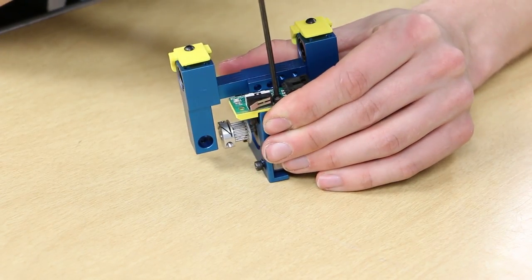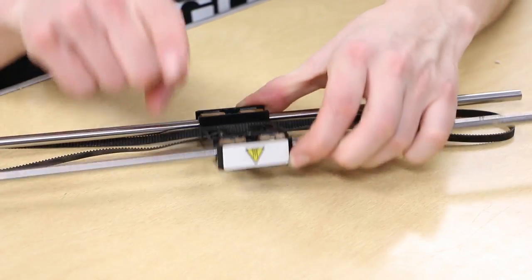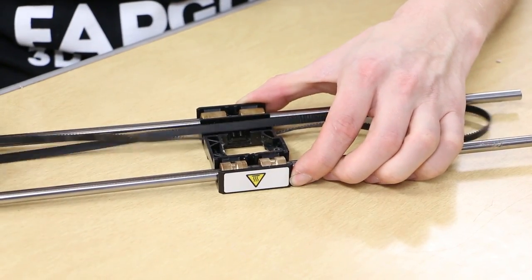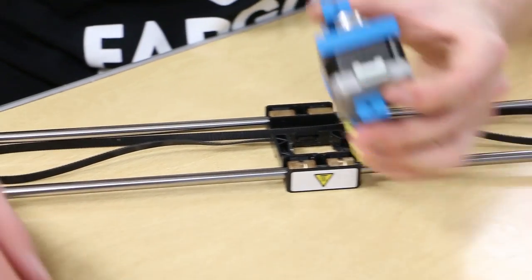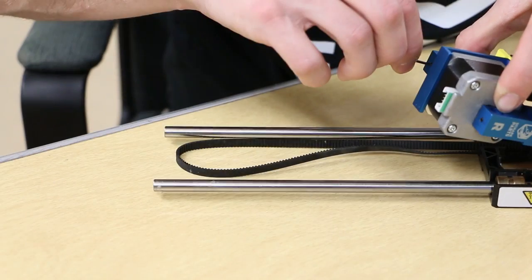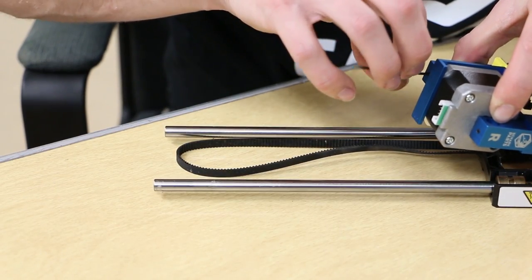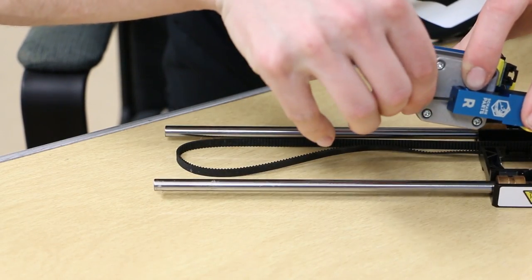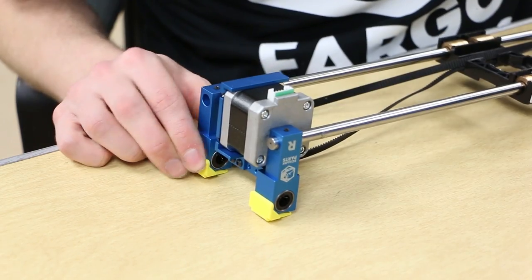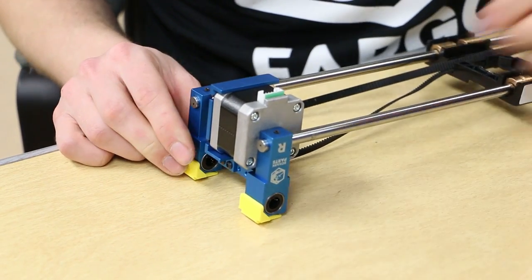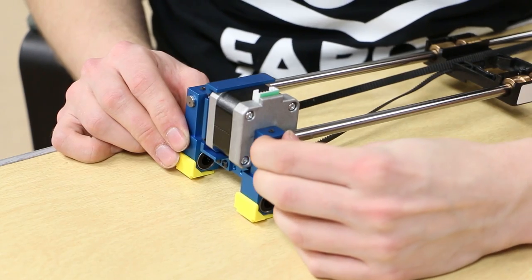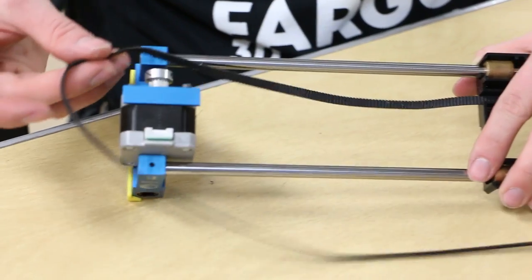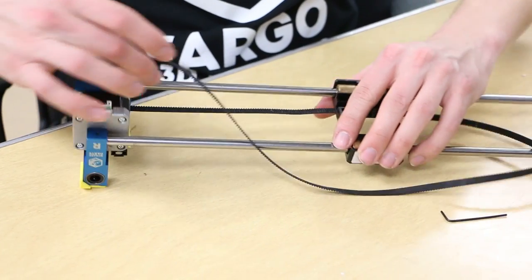Next we will reassemble the gantry system. Place the carriage down with the bushings facing upwards and the front of the carriage pointing away from you. Grab the R linear bracket assembly and loosen its bottom set screws. Slide the X-axis rods into place by flushing the ends of the rods to the outside of the linear bracket. Retighten the set screws and loop the belt over the motor pulley.